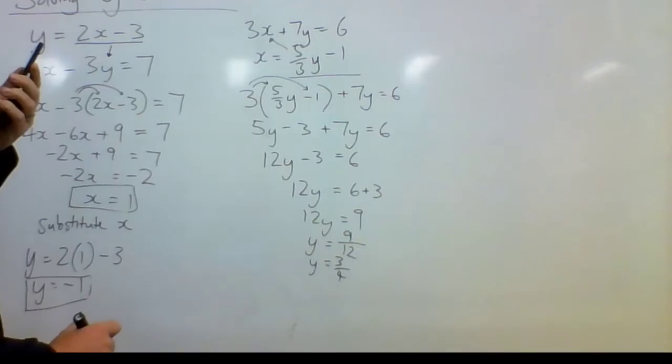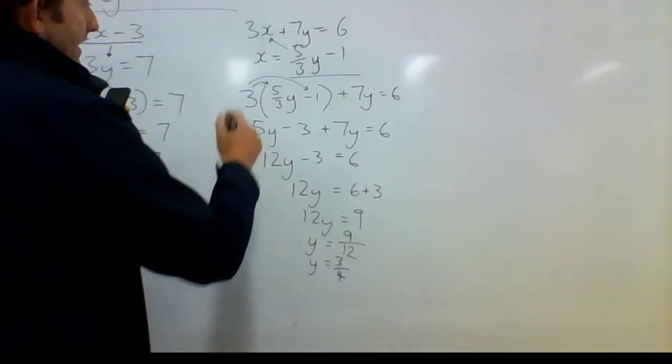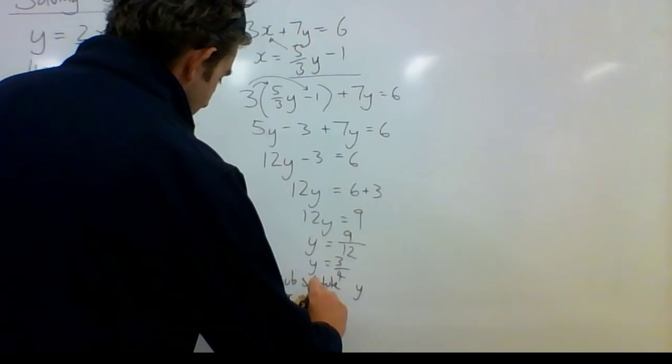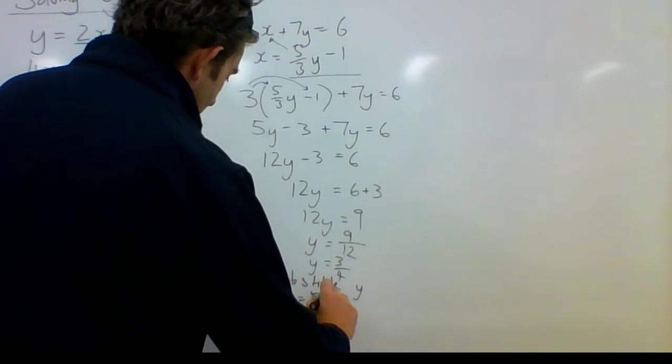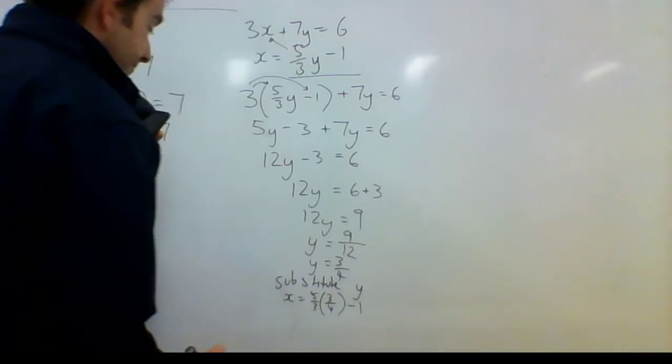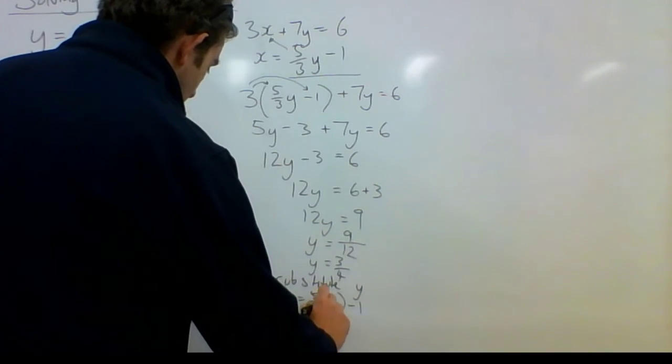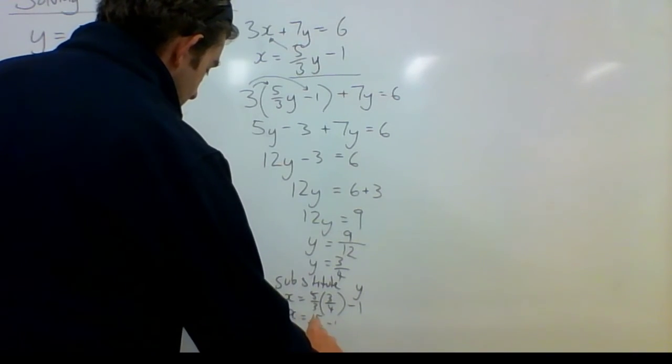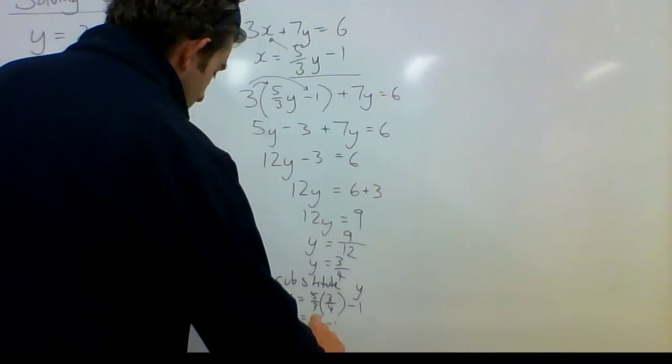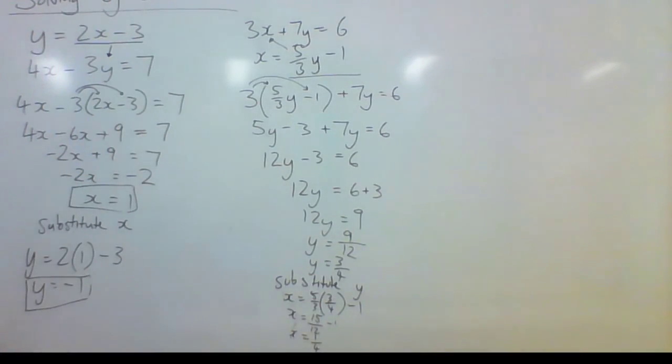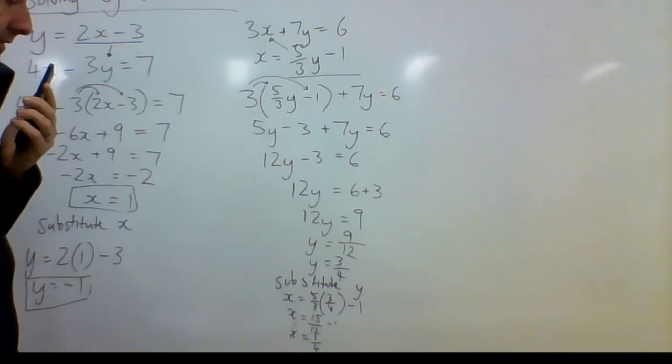Now I'm going to substitute that back up here. So x is equal to 5 thirds times 3 quarters take 1. x is equal to 15 over 12 take 1. x is equal to 3 twelfths which is 1 quarter. You can use your calculator for that part there if you are not good with working with fractions.